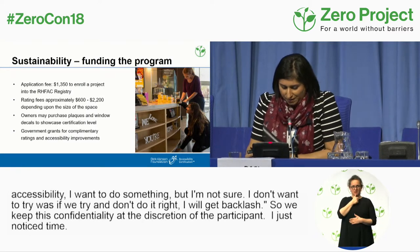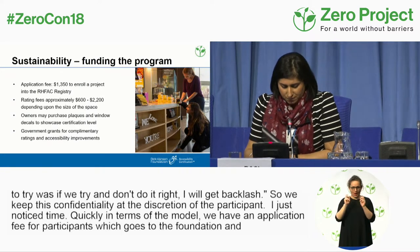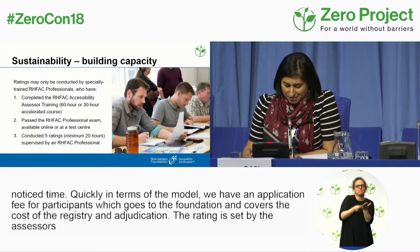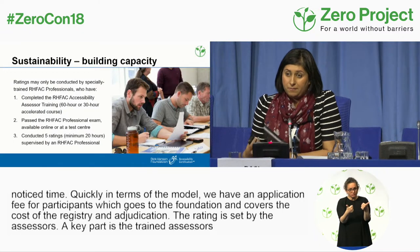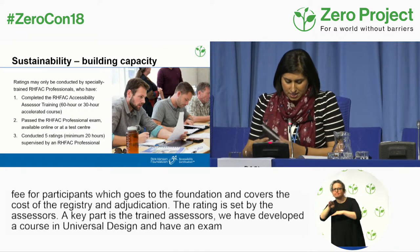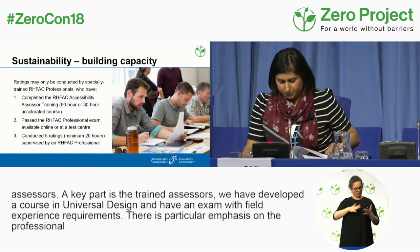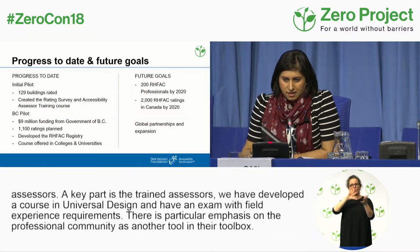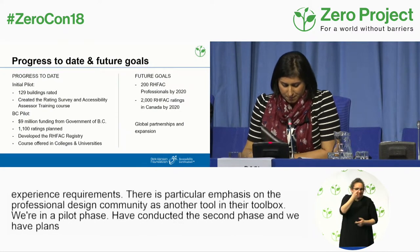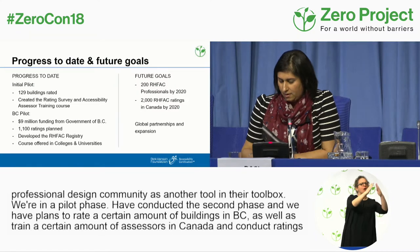We keep a component of confidentiality and the ability to share results at the discretion of the participant. In terms of the model, we have an application fee for participants that goes to the foundation and covers the cost of the registry and adjudication. Rating is set by the assessors, and there are also public recognition tools. A key part is our trained assessors — we've developed a course in universal design and applying our rating survey, a professional competency exam, and field experience requirements that anybody can take. We are in a pilot phase, having conducted our second phase, with plans to rate buildings in BC and train assessors across Canada over the next short-to-midterm goals.